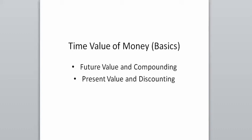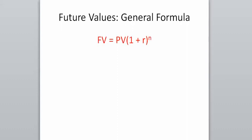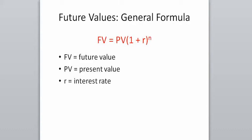We're going to take a look at some basic concepts behind the time value of money. We're going to look at future values and the concept of compounding, and we're going to talk about present values and something called discounting. Our basic formula for the time value of money is: future value equals present value times 1 plus R to the N, where FV is the future value, PV is the present value, R is the interest rate, and N is the number of periods.